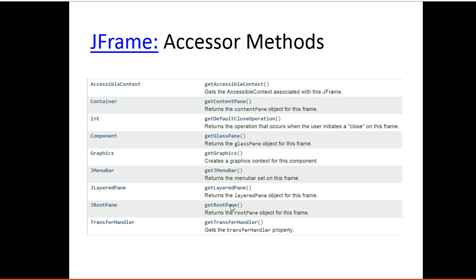So here, for example, is the JFrame class. And you can see that there's a whole bunch of get methods built into it. There's get accessible context, there's get context painting. This is how I access information about the JFrame class.